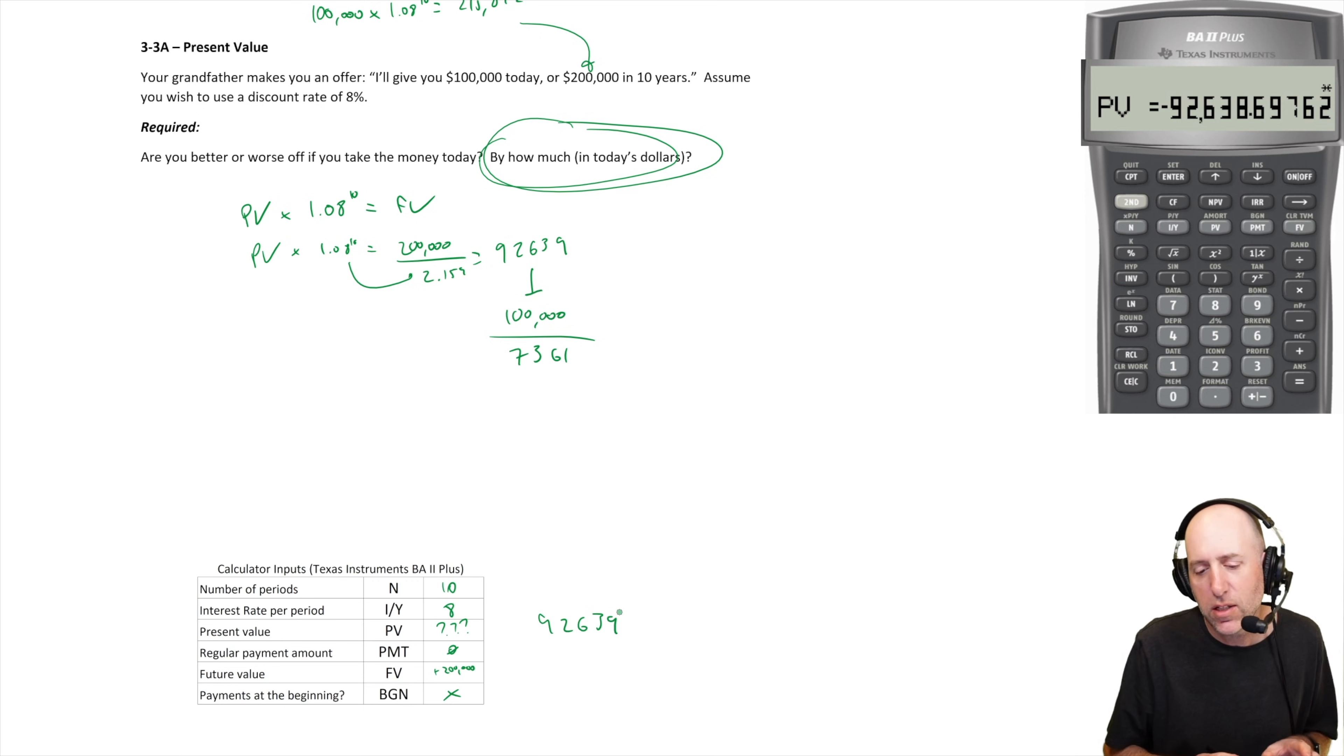And in other words, I'd have to give up $92,000 today. That's why it's negative. I'd have to give up $92,000 today to get $200,000 back in 10 years. So I'd rather get the $100,000 right now. And you can see the numbers do indeed match up.